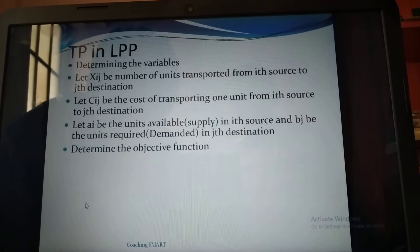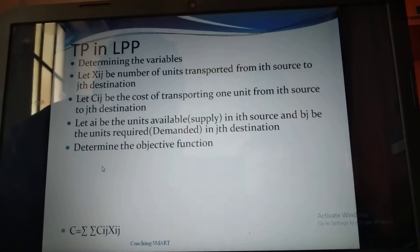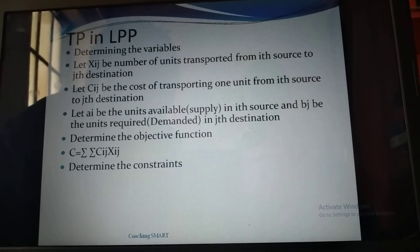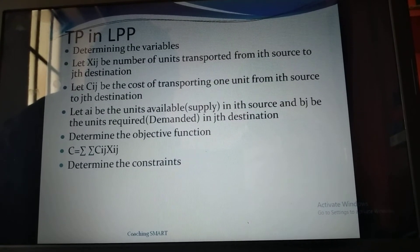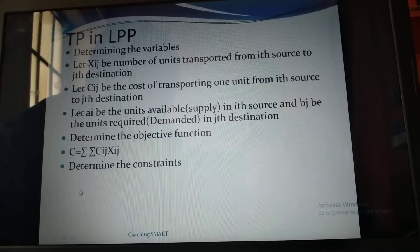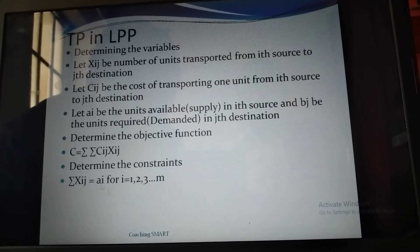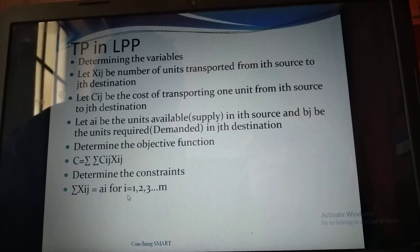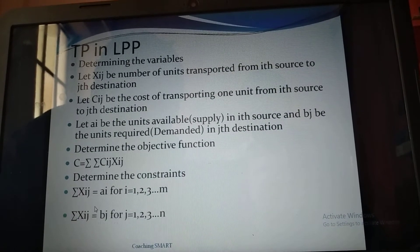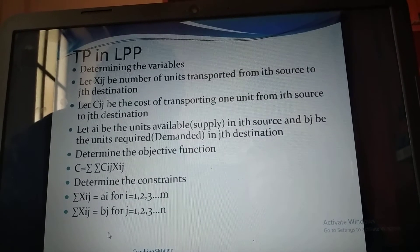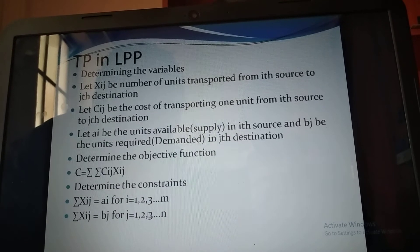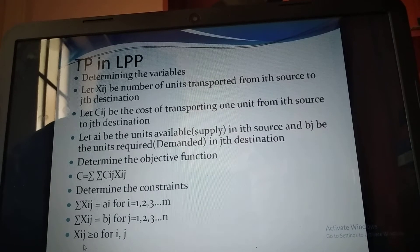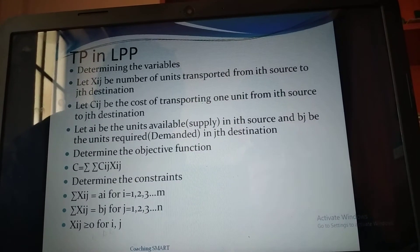Determine the objective function: the cost C equals the summation of Cij times Xij — the units to be consumed and demanded. Determine the constraint variables: summation of Xij equals Ai for i = 1, 2, 3, …, m; summation of Xij equals Bj for j = 1, 2, 3, …, n; and Xij must be greater than or equal to zero for all i and j.